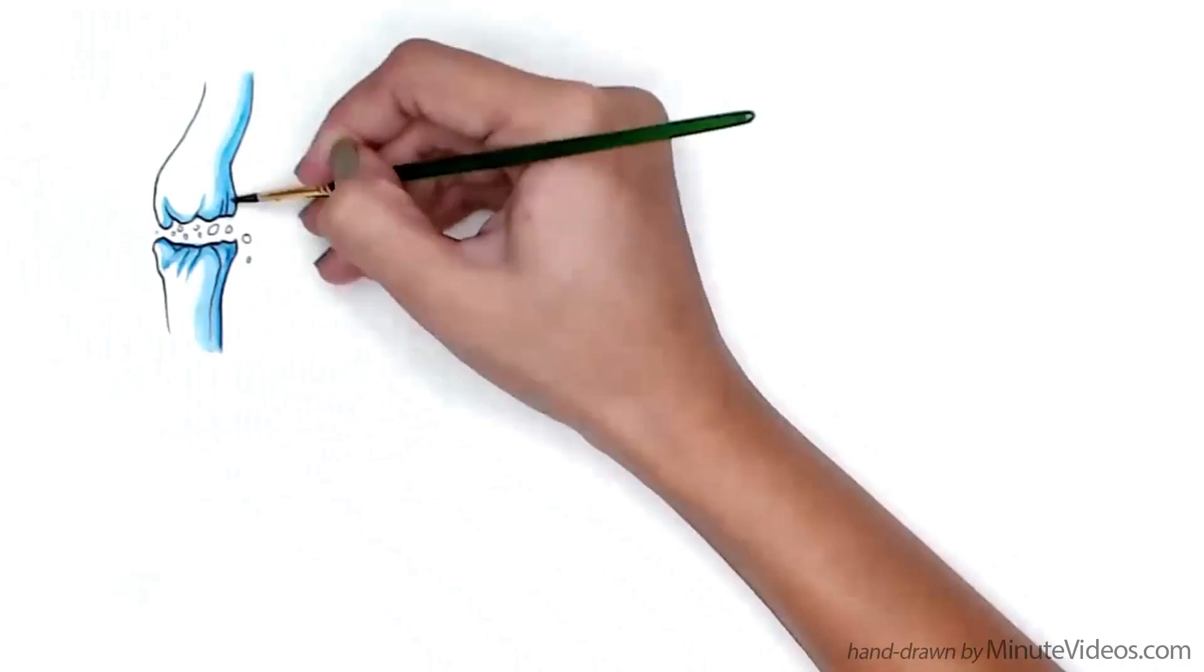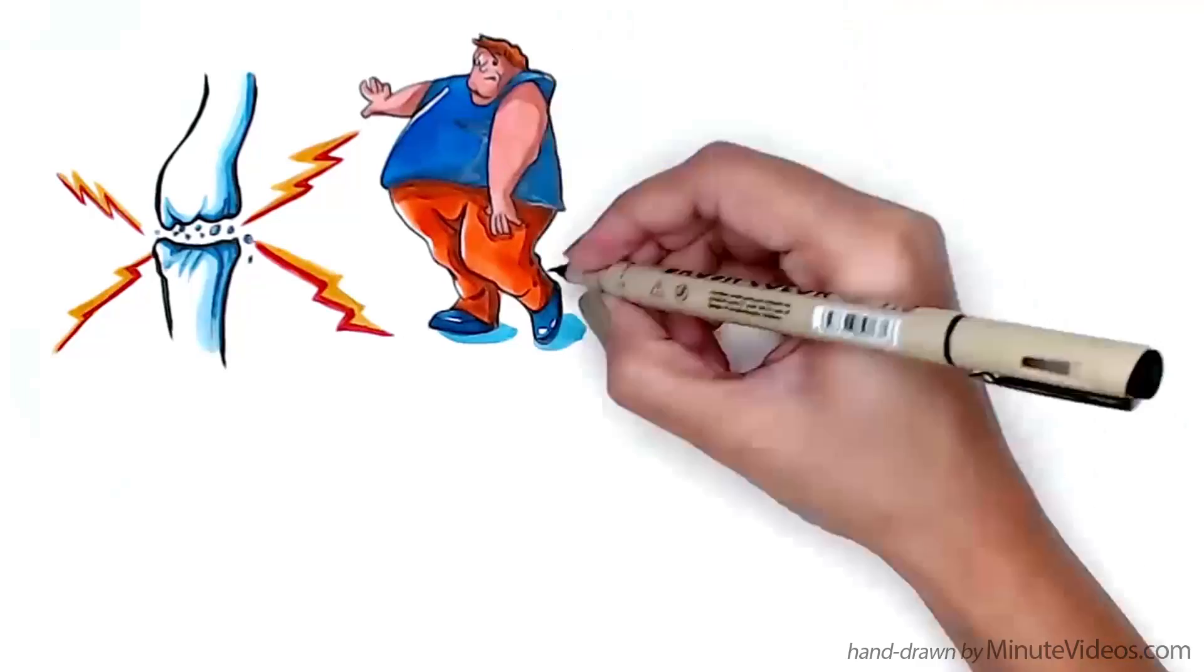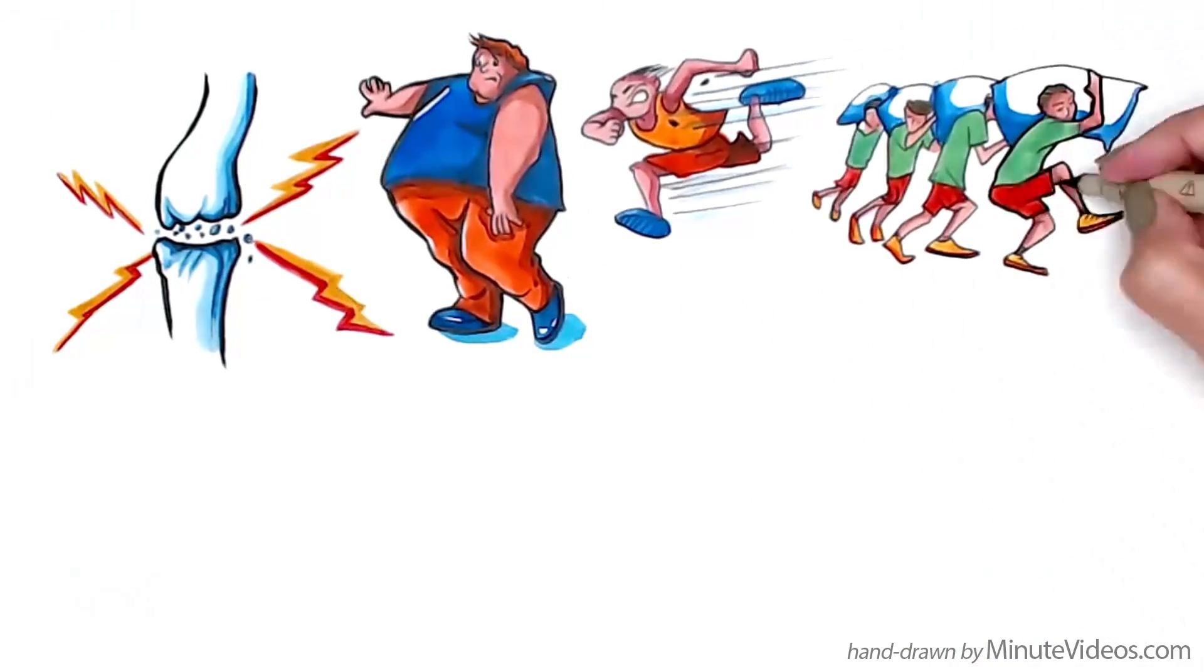Osteoarthritis is mostly caused by wear and tear of aging joints, but excessive weight, extreme physical activity or repetitive manual tasks can make it worse faster.